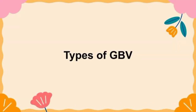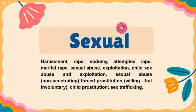Next, let's identify the types of GBV. First, the sexual type, which includes harassment or rape, sodomy, attempted rape, marital rape, sexual abuse, exploitation, child abuse, child sexual abuse and exploitation. Sexual abuse includes non-penetrating acts. Prostitution, which may be willing but involuntary, also falls under this category.